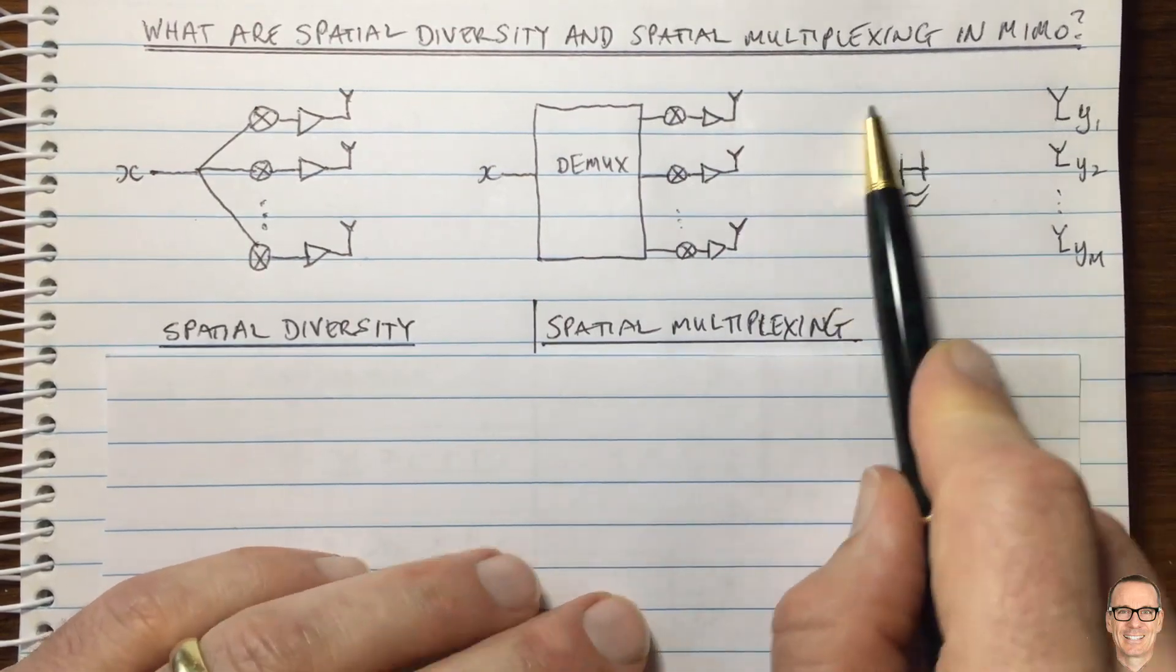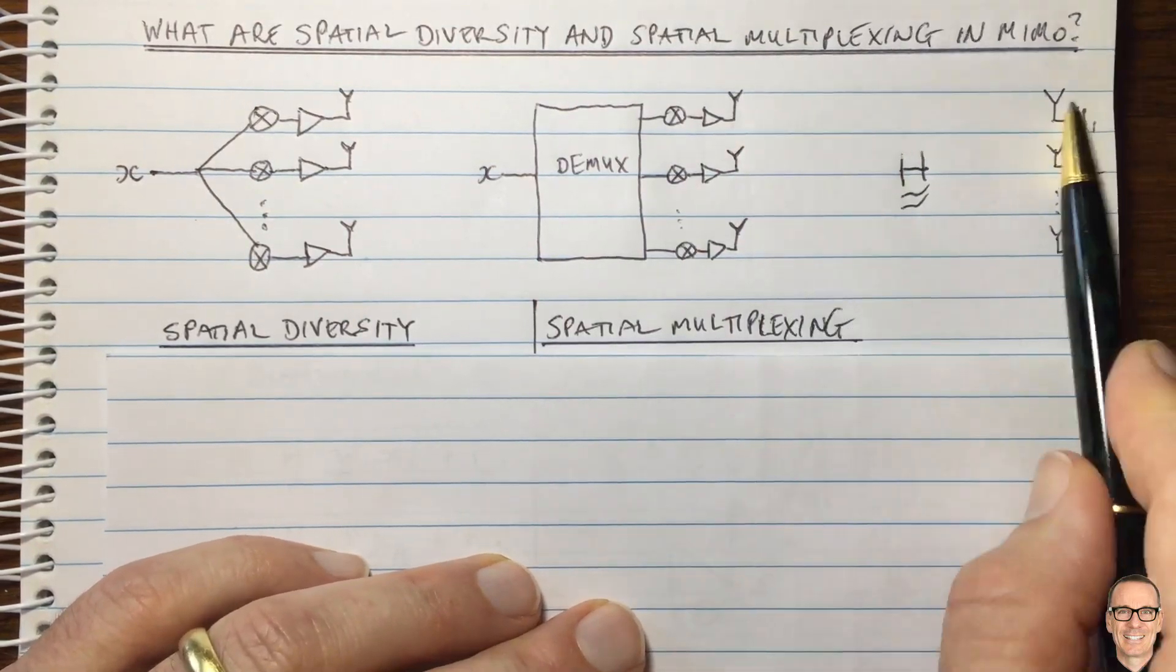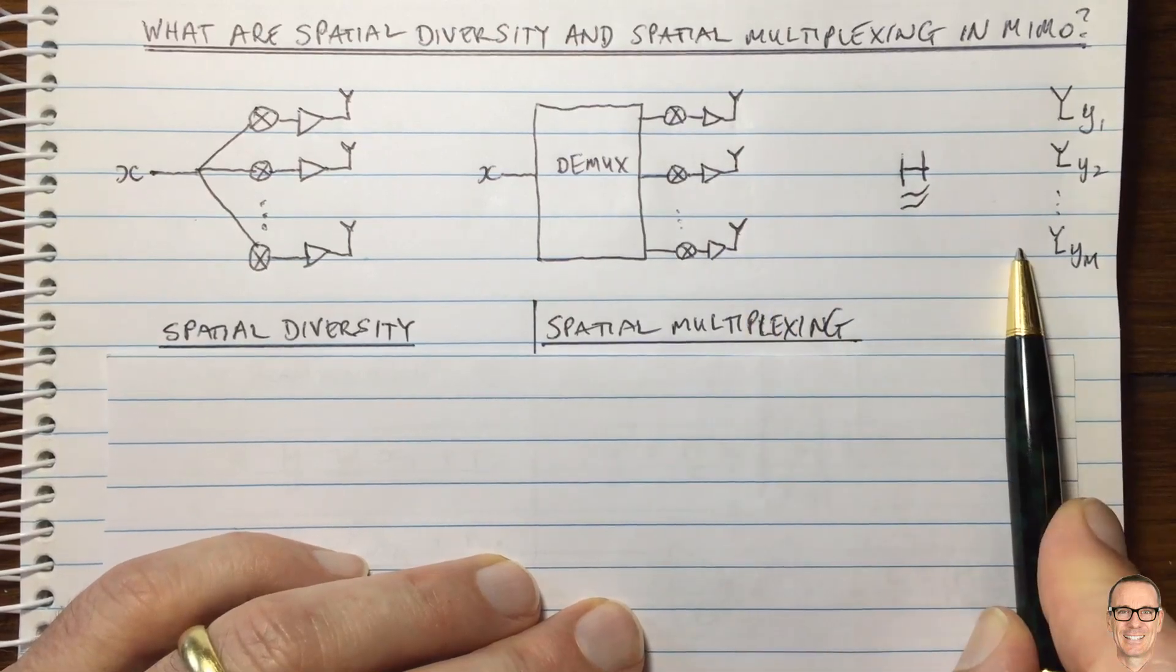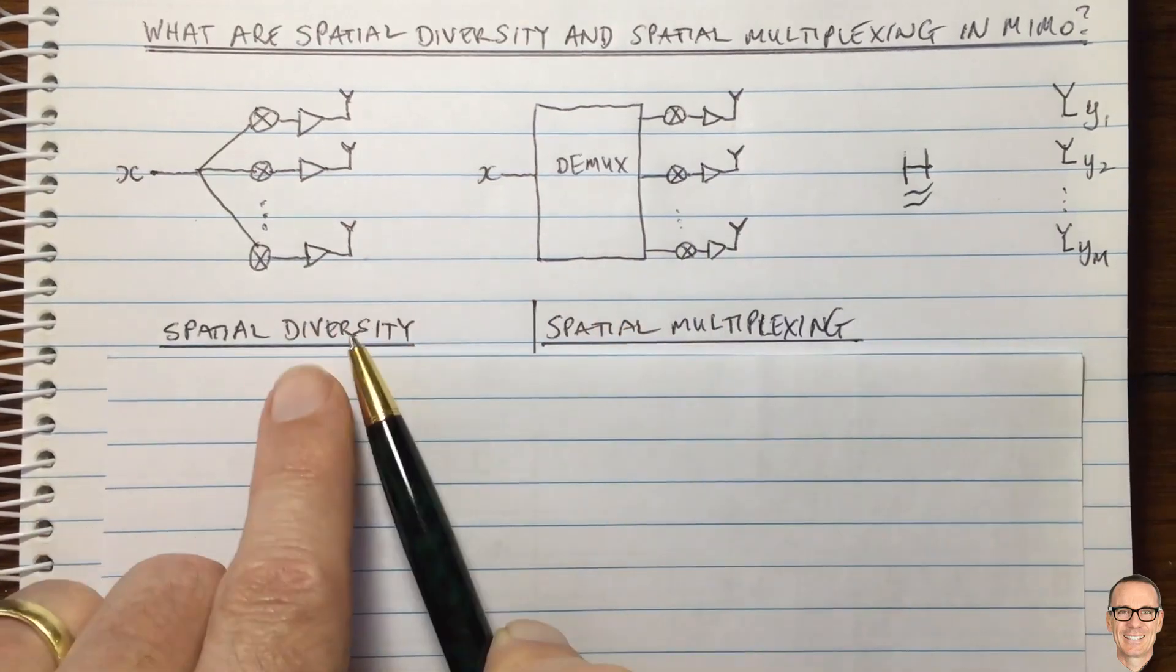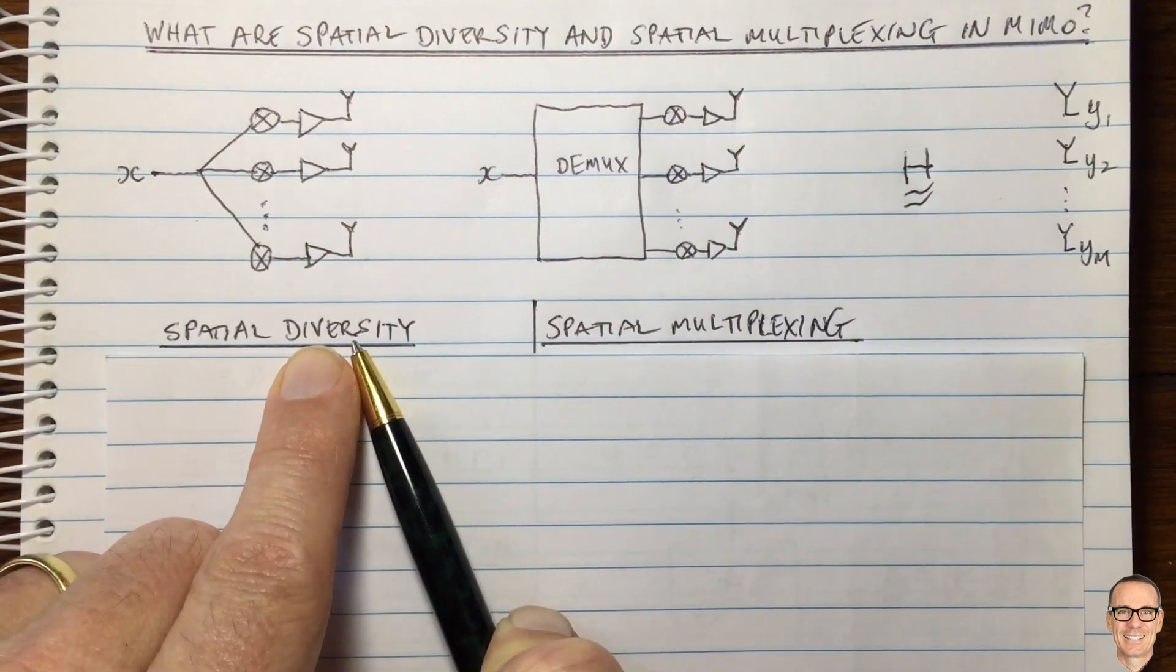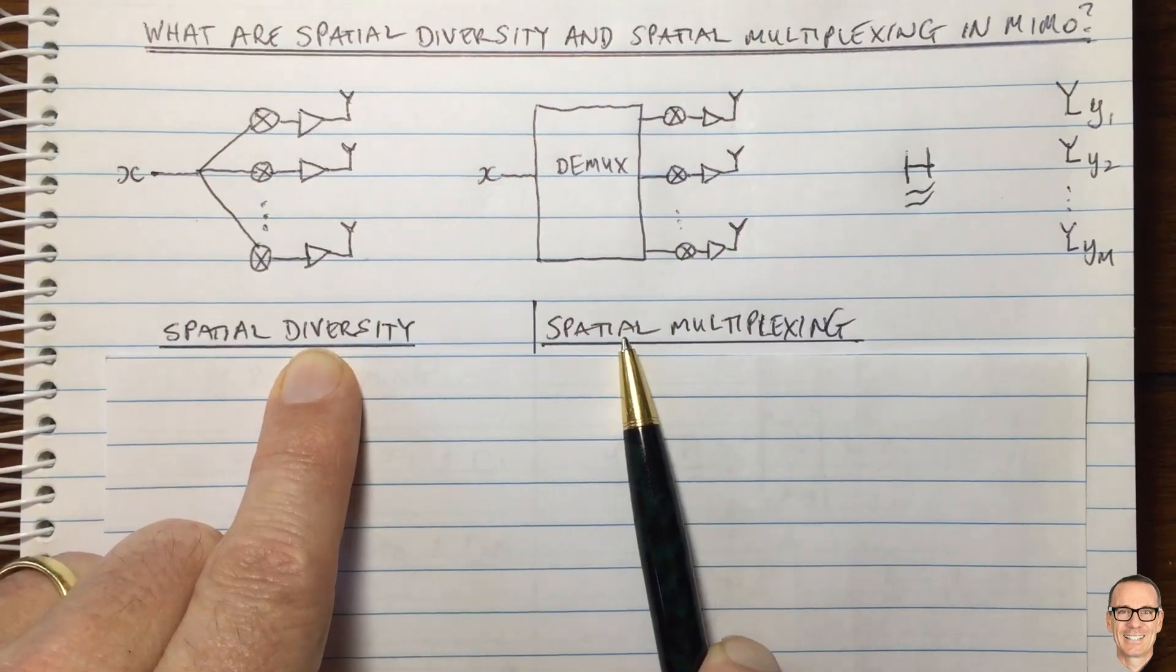And depending on the matrix H, all of these different coefficients, path gains, it determines or gives you guidance to choose spatial multiplexing or spatial diversity, or as I said, a hybrid.